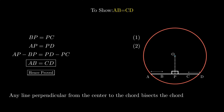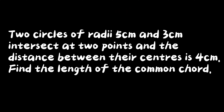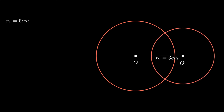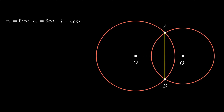Moving on to the next problem. The problem states that a circle of radius 5 cm with center point O and another circle of radius 3 cm with center point O' are separated at a distance of 4 cm from their centers, that is length of segment OO' equals 4 cm. Let AB be the common chord formed by joining the two intersecting points on the given circles. We need to find the length of common chord AB.